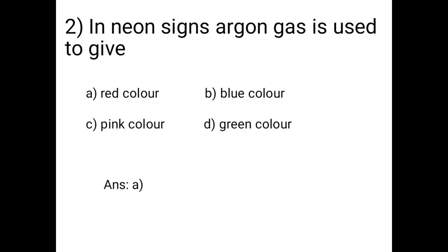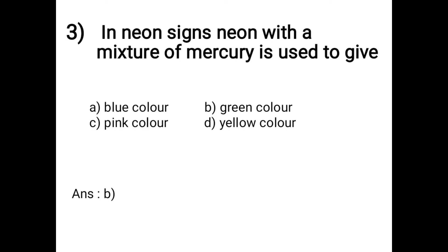Question 3: In neon signs, neon with a mixture of mercury is used to give which color? Options are: A - blue, B - green, C - pink, D - yellow. The answer is option B: green color. When only neon is used, the color is pink, and when mixed with mercury, the color is green.